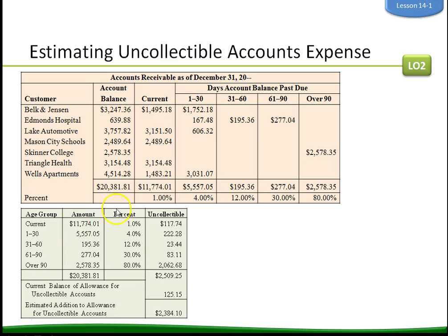Then we do some math. We take all the column totals and enter them by age group, then enter the corresponding percentages. For example, $11,774.01 times 1% gives the uncollectible estimate for current accounts, and each subsequent total is multiplied by its percentage. We add all of those up to get the total amount most likely uncollectible. We then look at the current balance of the allowance for uncollectible accounts, subtract it, and get the estimated addition to the allowance for uncollectible accounts.